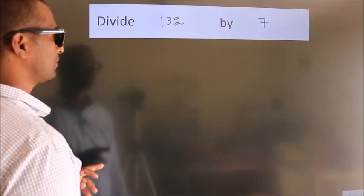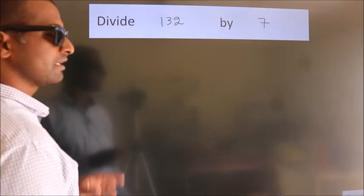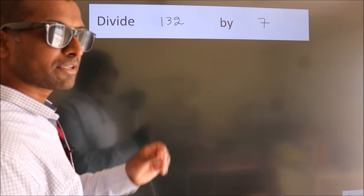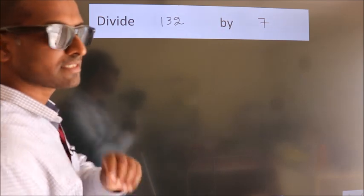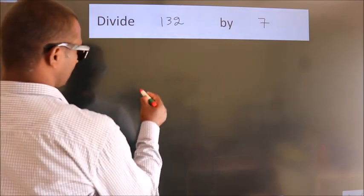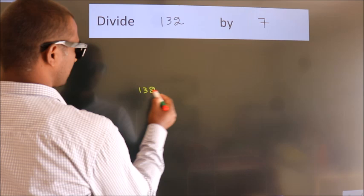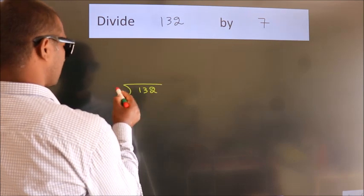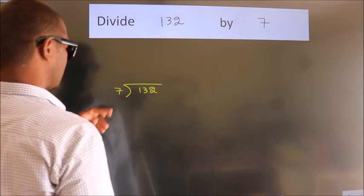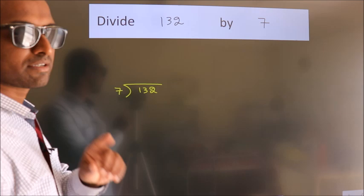Divide 132 by 7. To do this division, we should frame it in this way. 132 here, 7 here. This is your step 1.